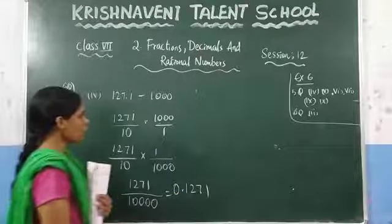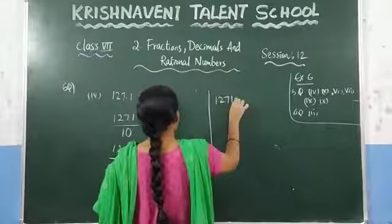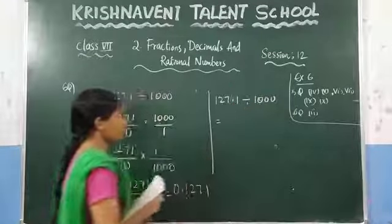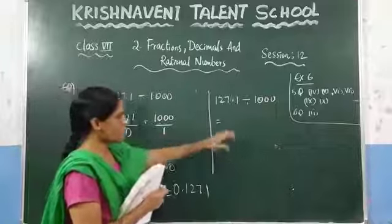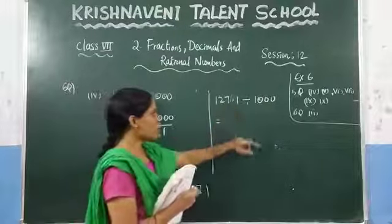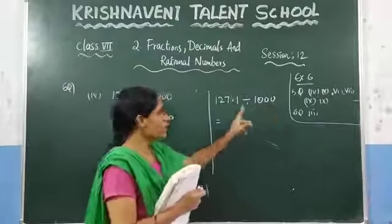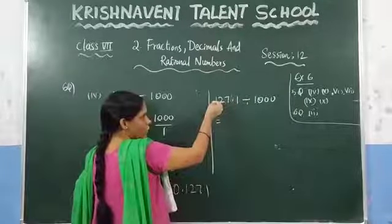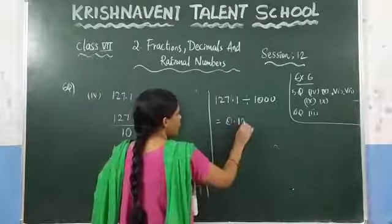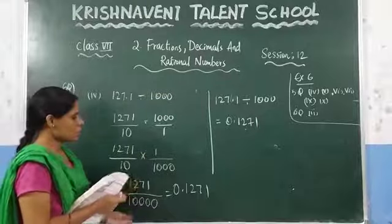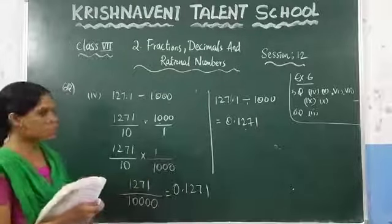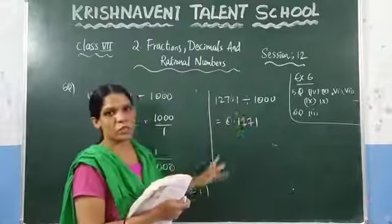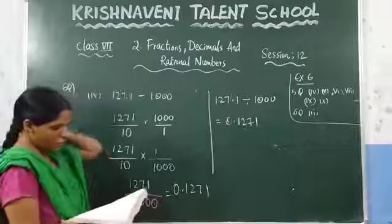The answer will be 0.1271. The other method: 127.1 divided by 1000 — since there are three zeros, shift the decimal point three numbers to the left: 1, 2, 3. The answer is 0.1271. Both methods give the same result — count the zeros and shift the decimal point to the left that many places, keeping the decimal point before the shifted digits.